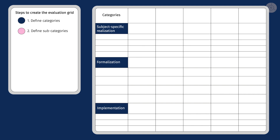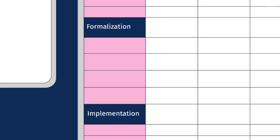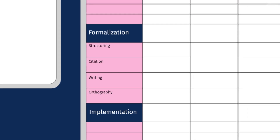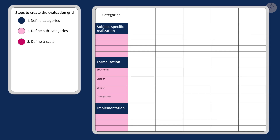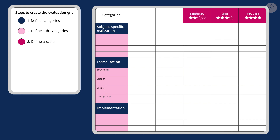In the next step, find subcategories for each central criterion. In an ideal rubric, all the subcategories of one criterion represent the criterion in total. Now think about one criterion you want to assess and find one subcategory. We'll take formalization and name one subcategory: autography. In the next step, we have to define a scale. We'll choose the steps: very good, good, satisfactory, sufficient, insufficient.